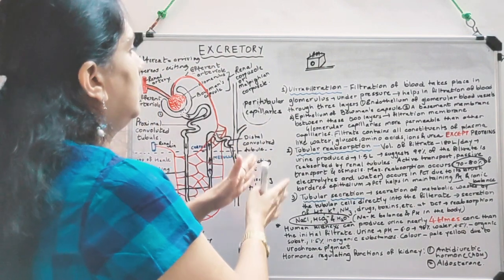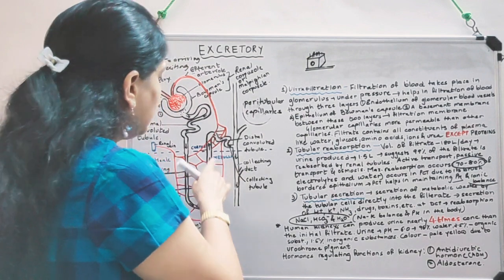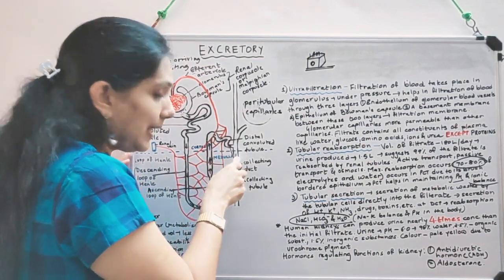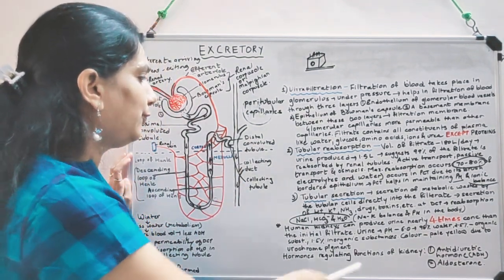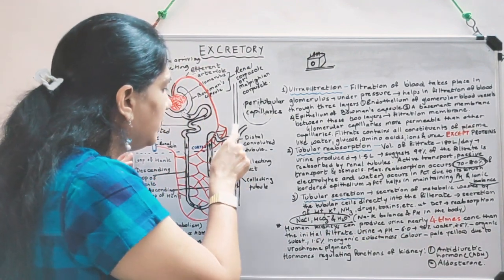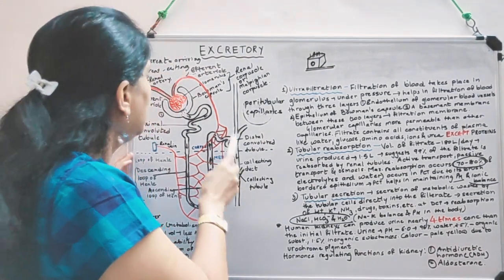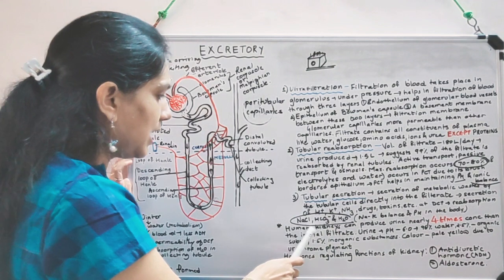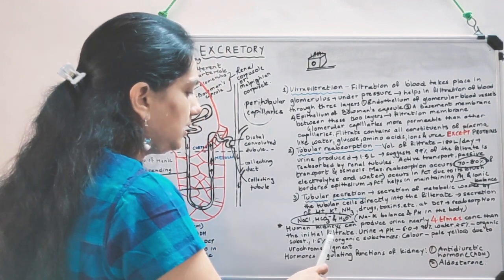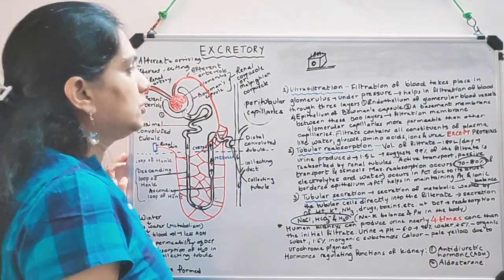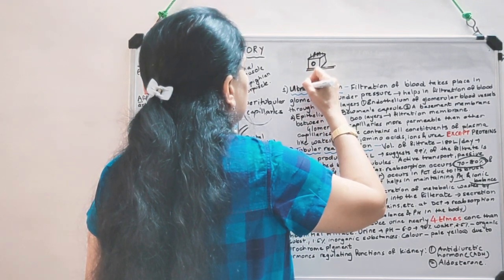After the filtrate enters the collecting tubule, there is still absorption of water. The urine that is formed is four times concentrated — the fluid arriving here is four times more concentrated than the initial glomerular filtrate. Human kidneys can produce urine nearly four times more concentrated than the initial filtrate.